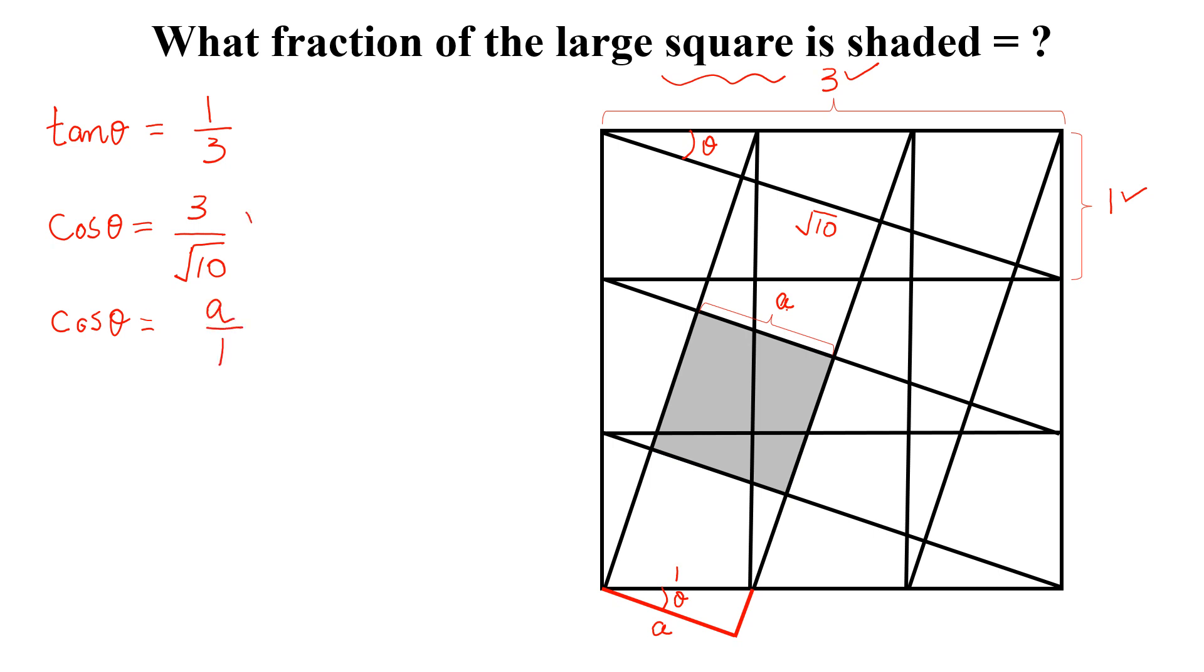So cos theta is equal to 3 by square root of 10 and cos theta equal to A. So we can write A equal to 3 divided by square root of 10.